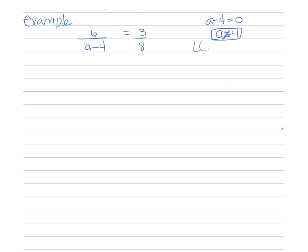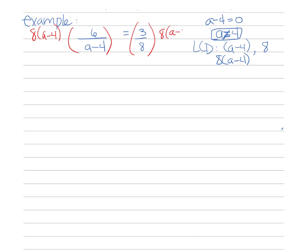Finding the LCD of all denominators: the first denominator is a minus 4 and the other is 8. Since a minus 4 is one whole entity and we don't know if it shares anything with 8, the LCD is 8 times (a minus 4). We now multiply both sides of the equation by 8 times (a minus 4), which will get rid of the fractions.